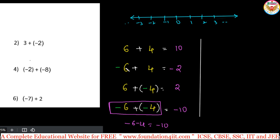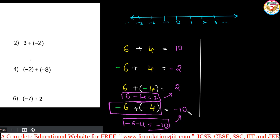The bigger number is 6, and 6 has a negative symbol, so minus 6 plus 4 gives minus 2. For plus 6 minus 4: 6 minus 4 is 2, and 6 is the greater number with a positive symbol, so the answer is plus 2. Remember: both negative or both positive — add the same way; one negative and one positive — do subtraction and keep the sign of the bigger number.